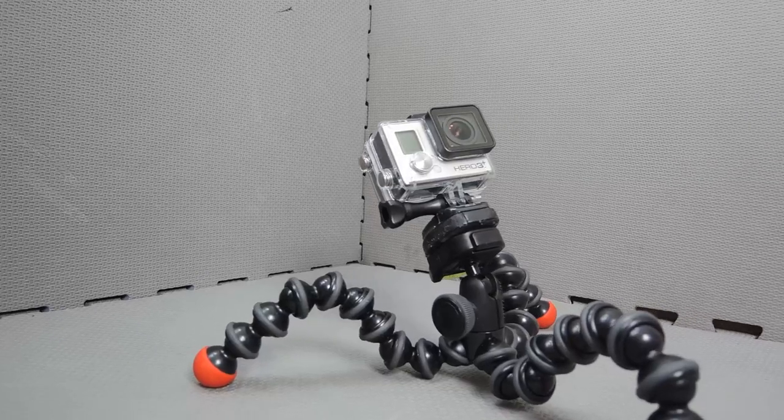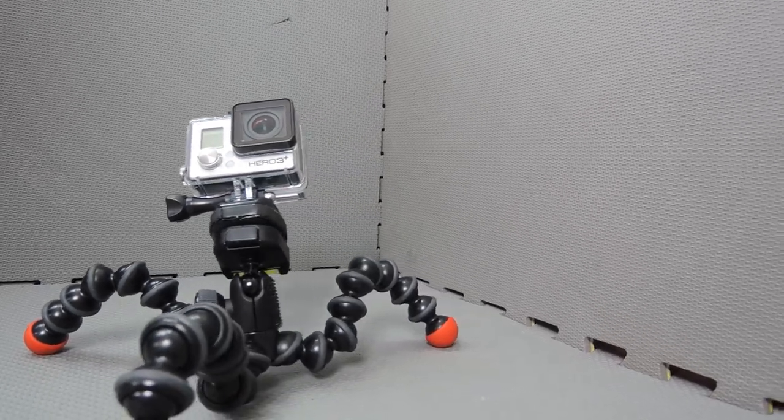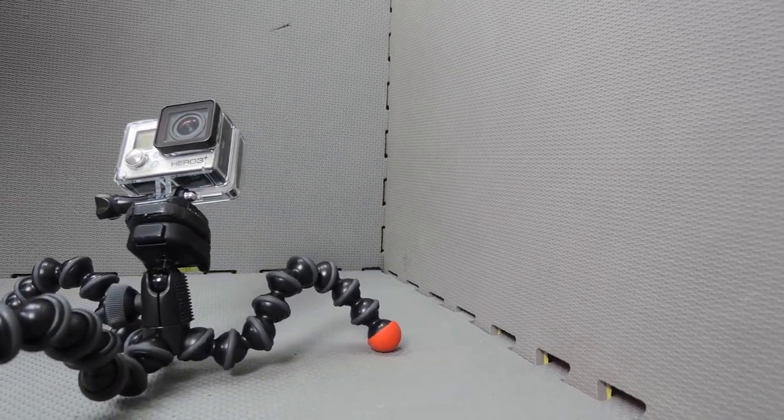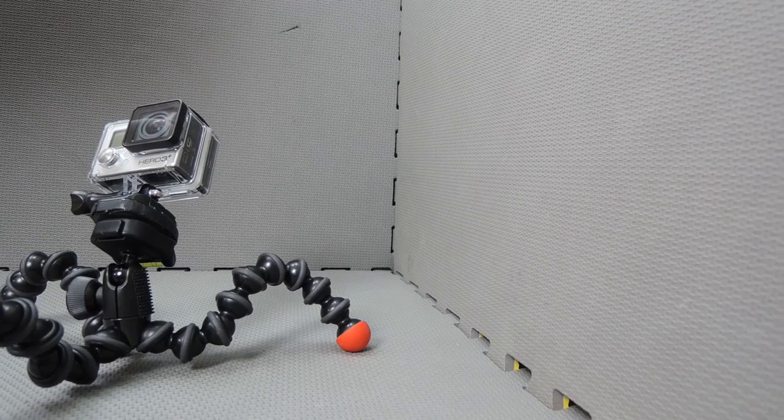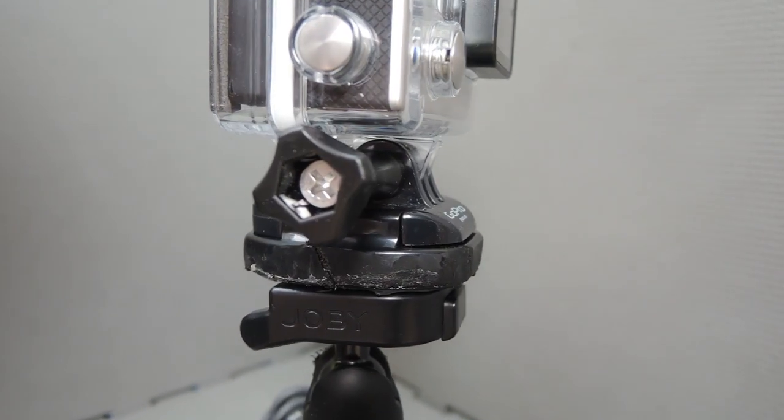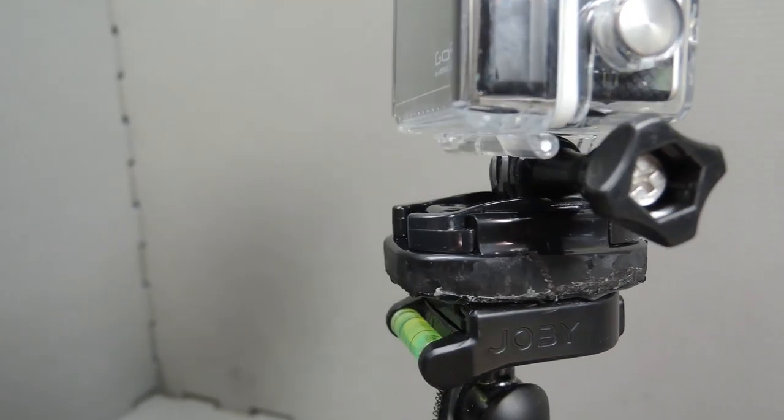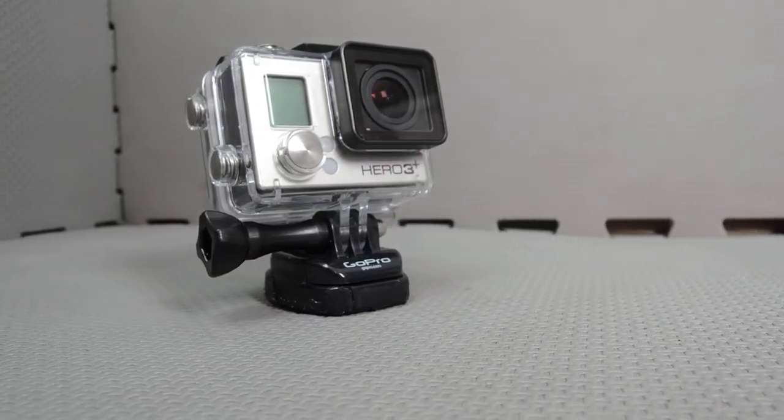Just like that, we've made a DIY GoPro tripod mount using nothing but the base plate that came with our GoPro in the packaging and a quarter by 20 inch bolt. This is a super cheap way to make yourself a tripod mount, something that should be in everyone's GoPro kit bag.